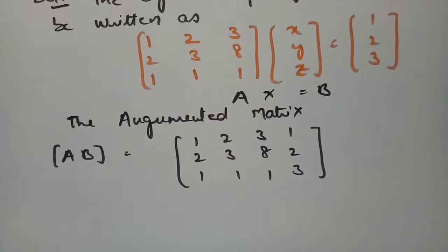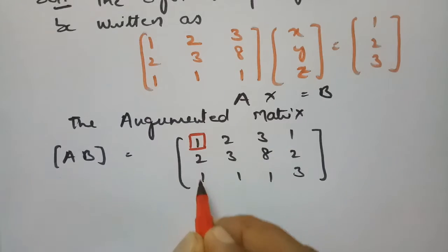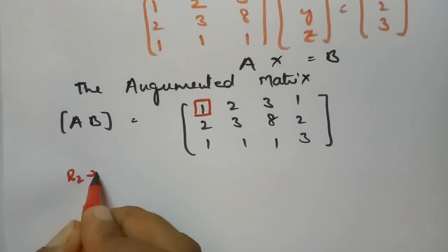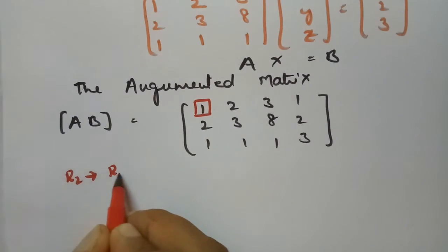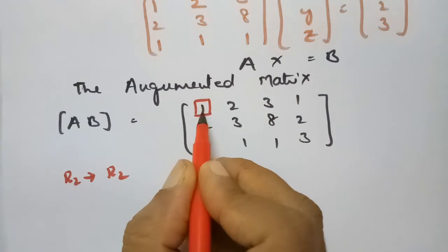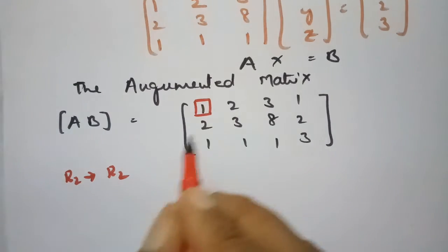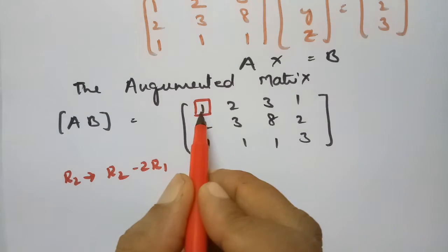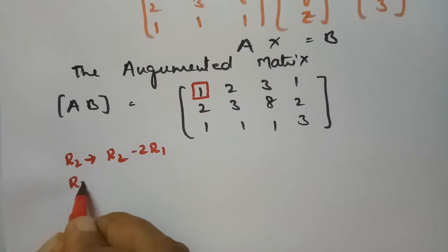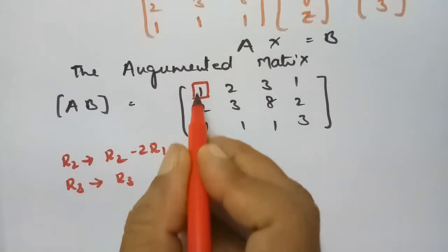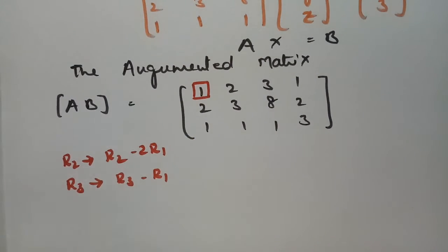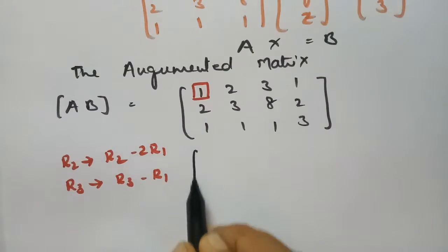It is clear that 1 is at the top in R1, row 1. Using R1, we have to make the entries below it zero. In order to make these two zeros, R2 is affected by subtracting 2 times R1, and R3 is affected by R3 minus R1. So there is a change in row 2 and row 3; row 1 remains as it is.